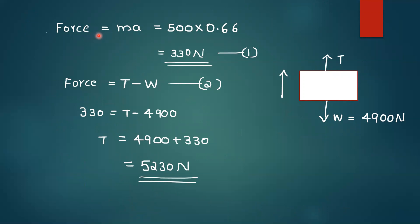Force equals mass times acceleration, equal to 500 into 0.66, that is 330 Newton. From the equation: 330 equals T minus W, that is T minus 4900. Therefore tension T equals 4900 plus 330, equal to 5230 Newton.